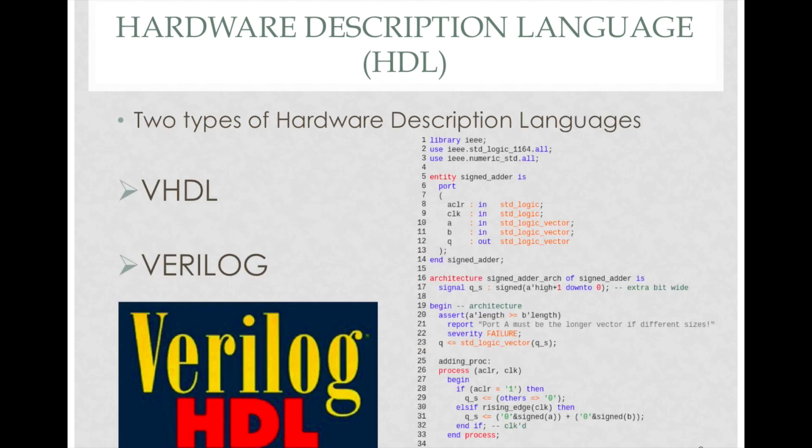So basically there are two types of HDLs. These two are the most important and the most used HDLs: VHDL and Verilog HDL. We shall see a short video about these now.